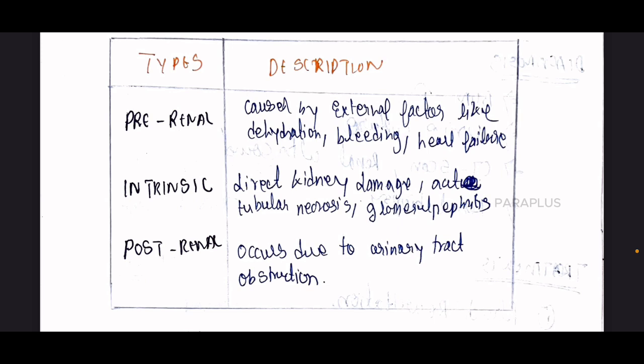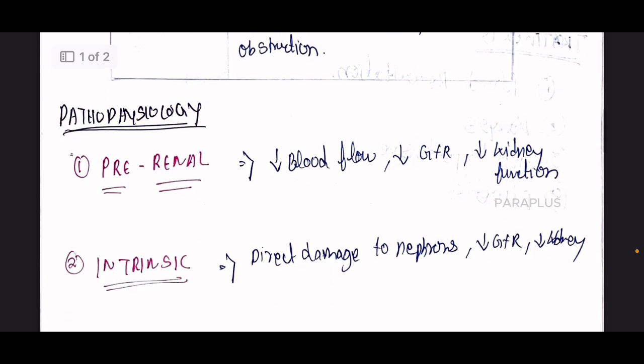Post-Renal is caused by urinary tract obstruction. Waste products like creatinine cannot be excreted. It is caused by a blockage in the urinary tract, and that is why it leads to post-renal kidney problems.